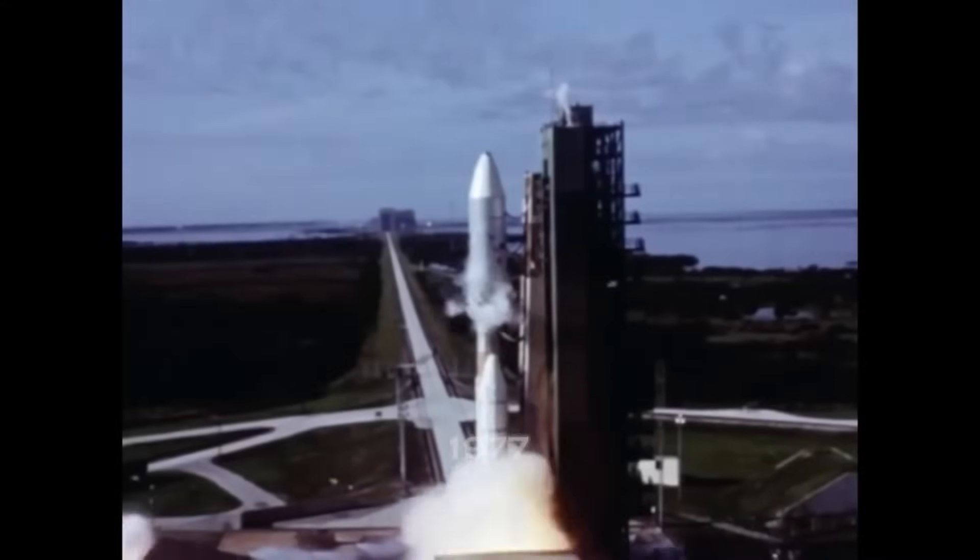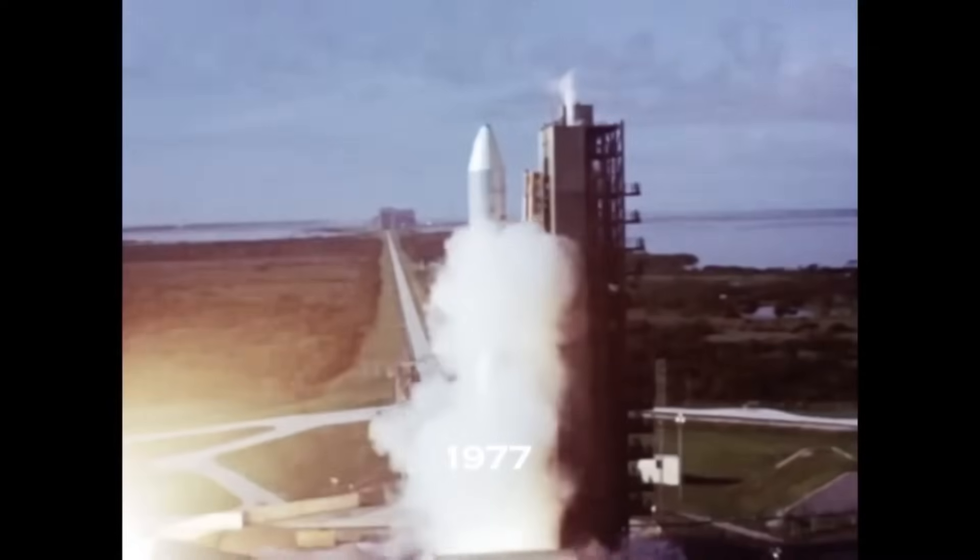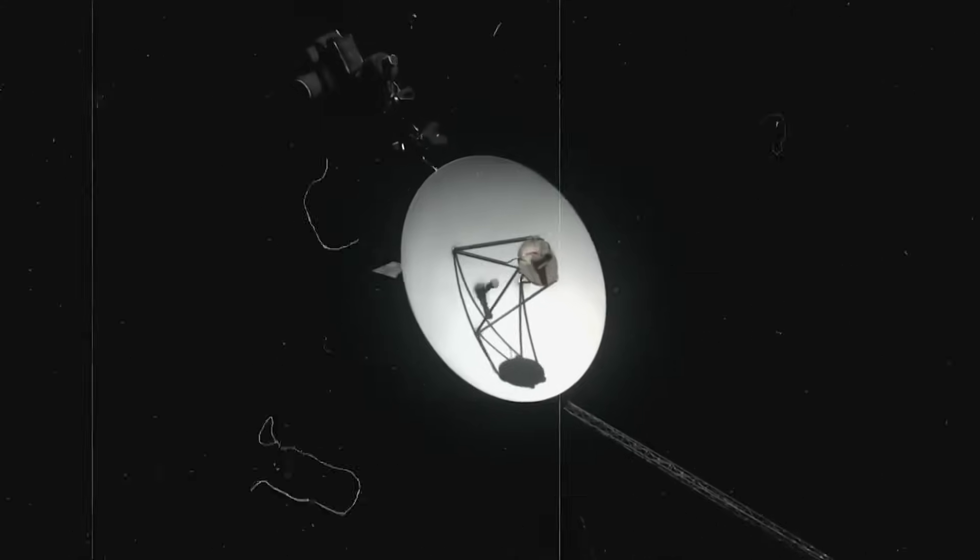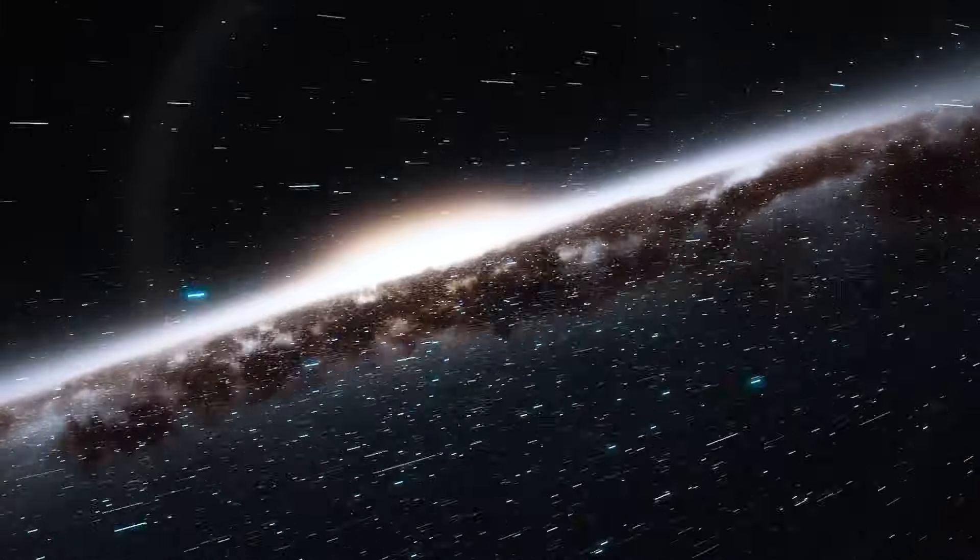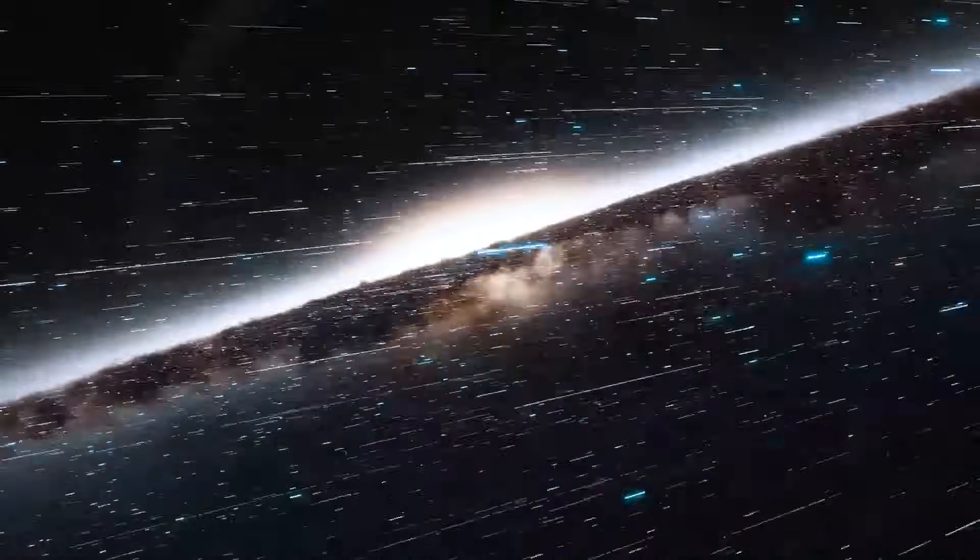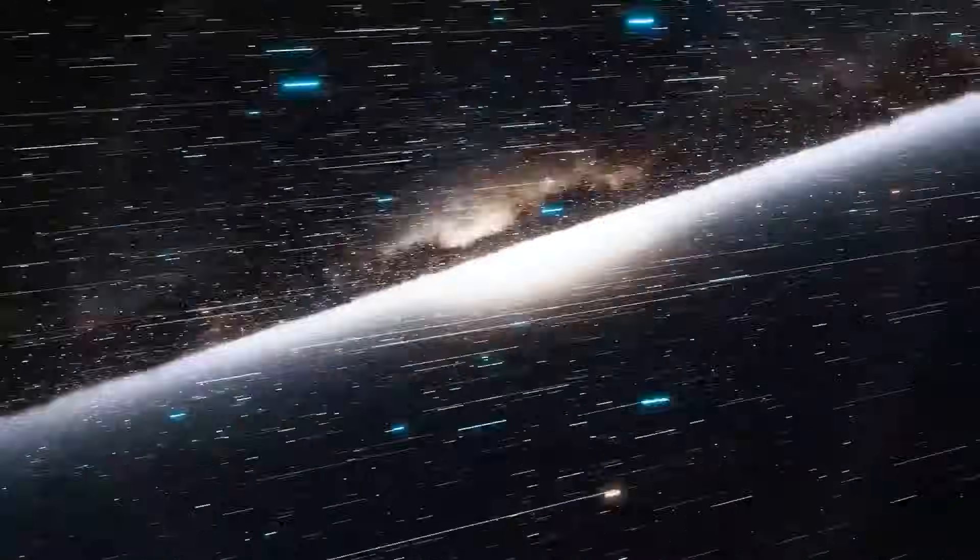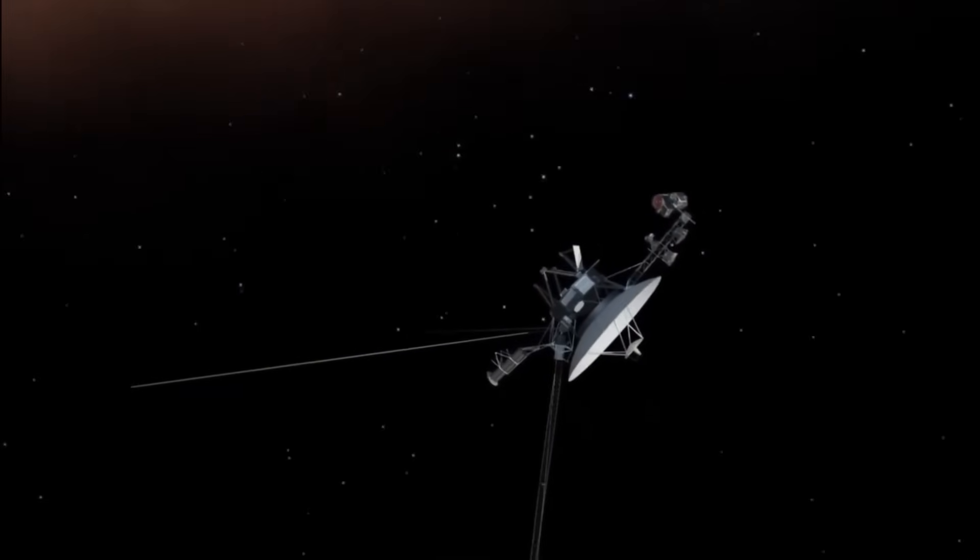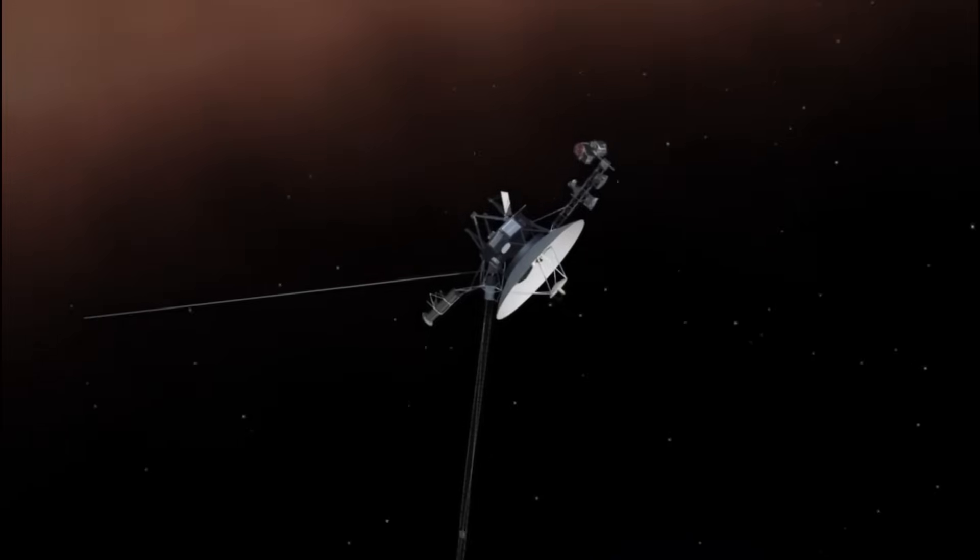Voyager 1 was launched in 1977 with a simple mission, explore Jupiter and Saturn. But once its primary job was complete, NASA made a daring decision to send it beyond the known into interstellar space. As it drifted farther, its instruments kept recording, snapping occasional frames of the blackness around it.